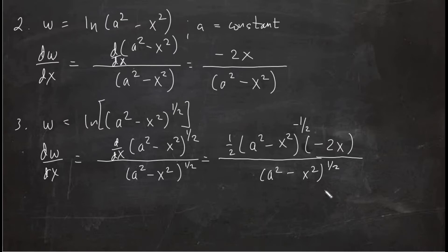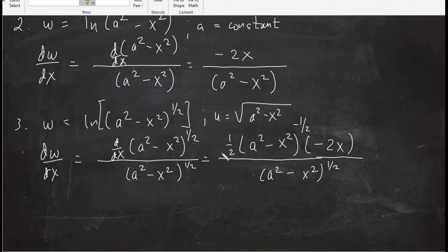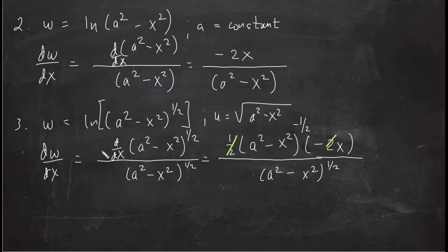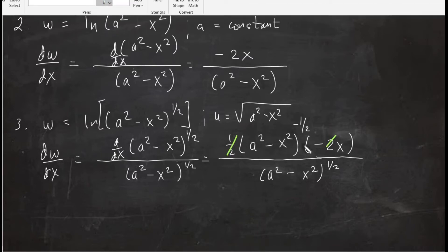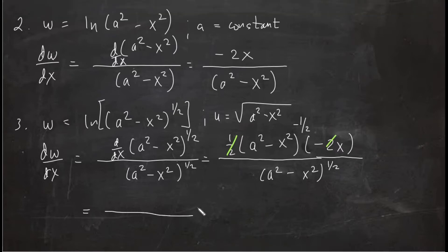Don't forget that u is the square root of a² − x², so the u in the denominator also carries the one-half exponent. Simplifying: the 1/2 and 2 cancel, and the exponents of (a² − x²) combine — negative one-half goes to the denominator becoming positive one-half, and one-half plus one-half equals one. The final answer is −x over (a² − x²).